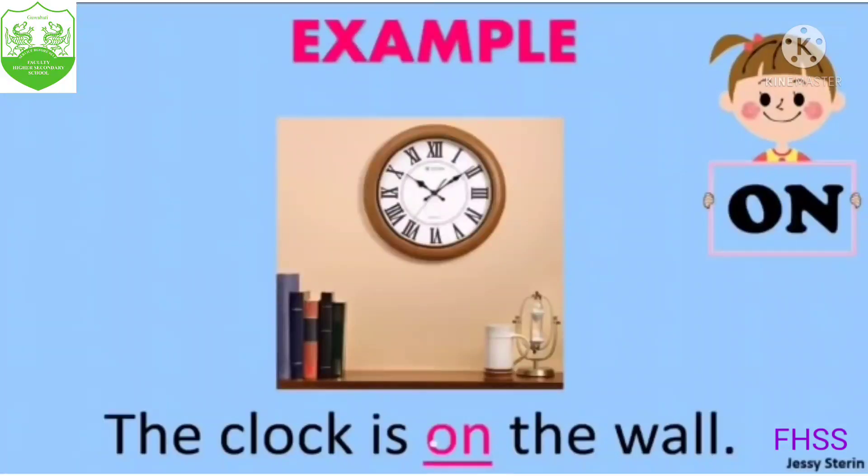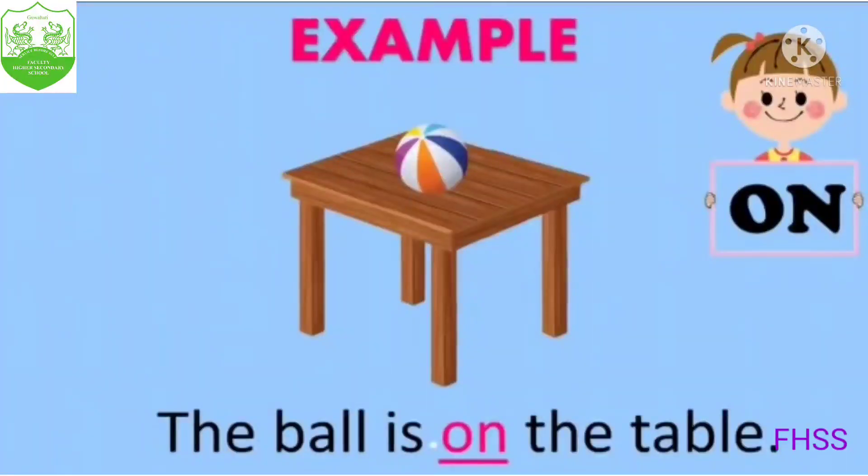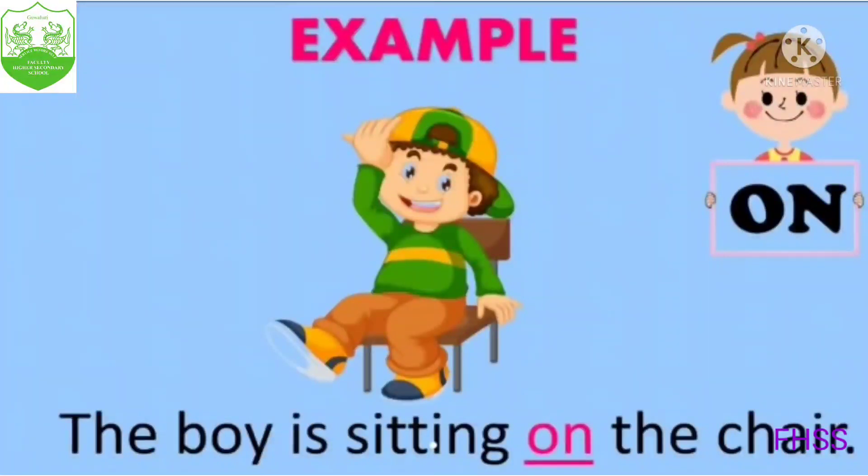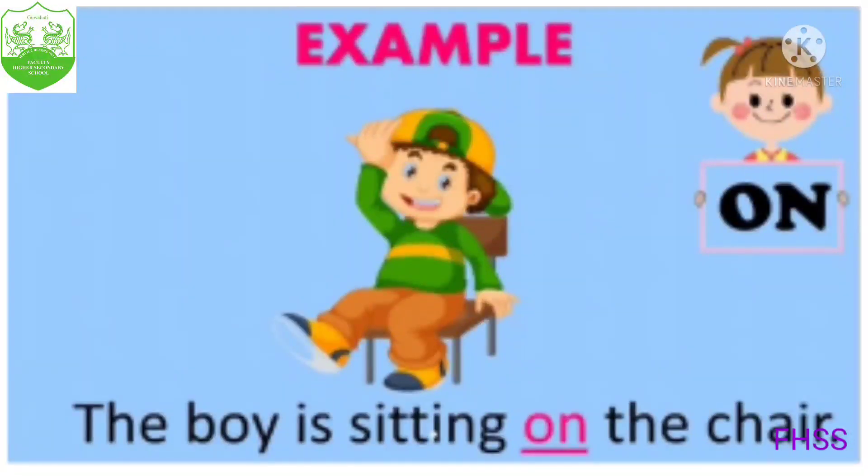So now look at this example. The clock is on the wall. So clock kaha hai? Wall ke ooper mein hai. The ball is on the table. Ball kaha par hai? Table ki ooper mein hai. Now look at this example. The boy is sitting on the chair. Boy kaha baita hai? Chair ke ooper mein. When something is on the top of something we use on.